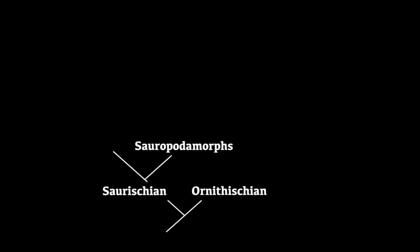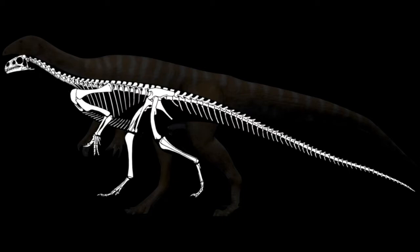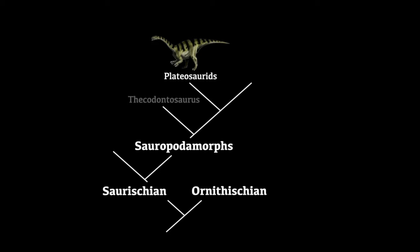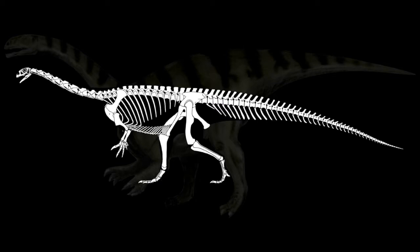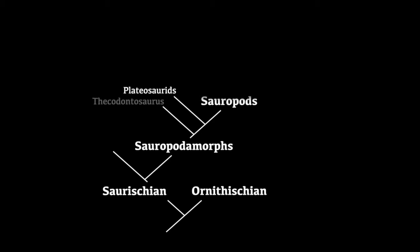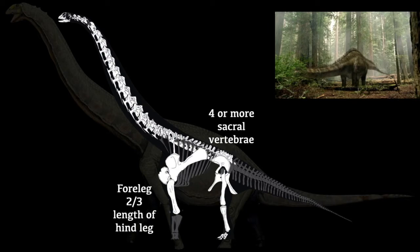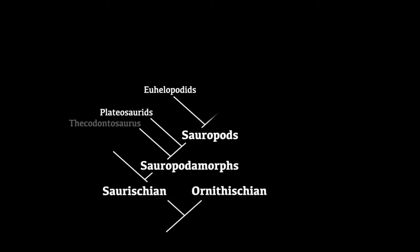Now let's look at the lizard-hipped saurischians and the sauropodomorphs. One of the earliest examples was Thecodontosaurus, where sauropods developed a long neck with ten vertebrae, though their forelimbs were still only half as long as their hind legs, making them bipedal. The first major group were the plateosaurids, often called the prosauropods — defined broadly as like Plateosaurus but not quite a proper sauropod — including Plateosaurus and sometimes Massospondylus. The first group of true sauropods were the euhelopodids, with at least four sacral vertebrae fused to the hip and forelegs two-thirds the length of their hind legs. Examples are Euhelopus and Qiaowanlong.